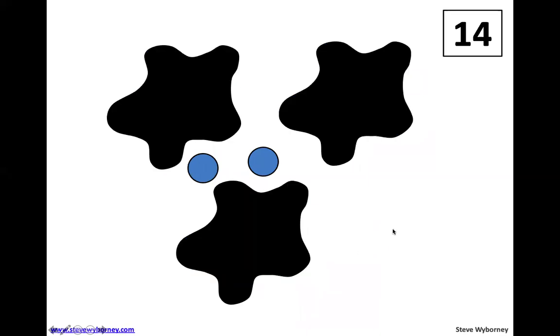Splat. 3 Splats that time. How many dots are showing? That's right, there's 2 showing. So how many dots are left and how many would be under each of these 3 shapes? Go ahead and think about what we did last time, and see if you can figure out how many are under each splat.